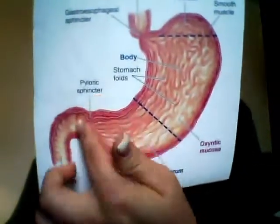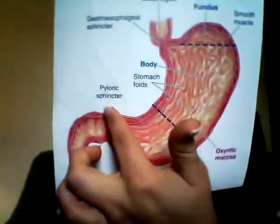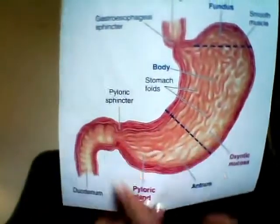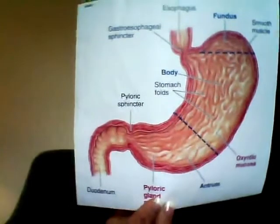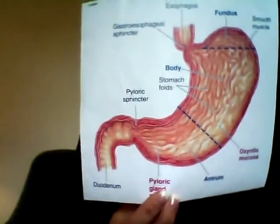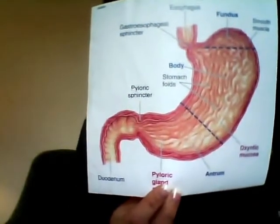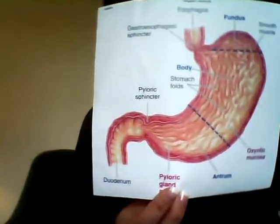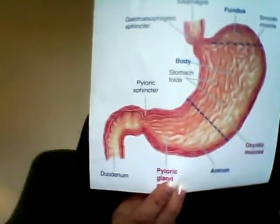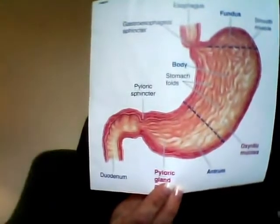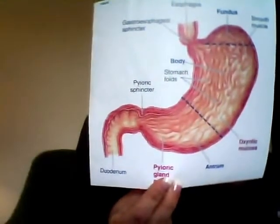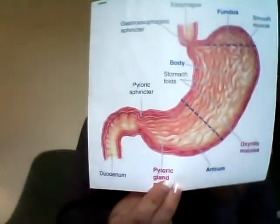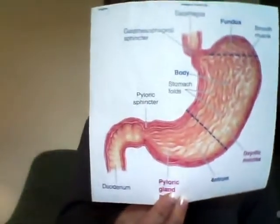Last but not least, we have our pylorus, which contains the pyloric sphincter that regulates the movement of partially digested food into the small intestine. It also prevents backflow of this food back into the stomach.